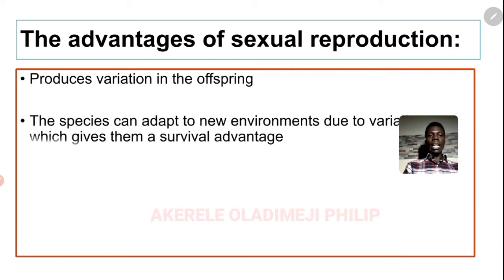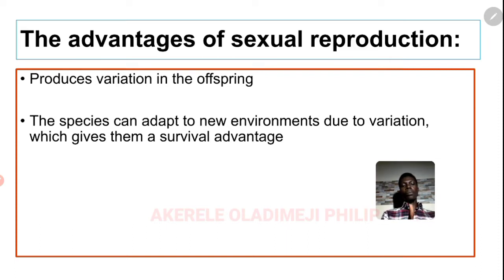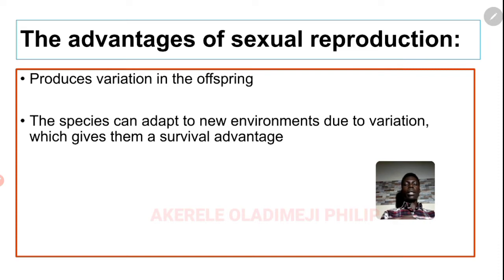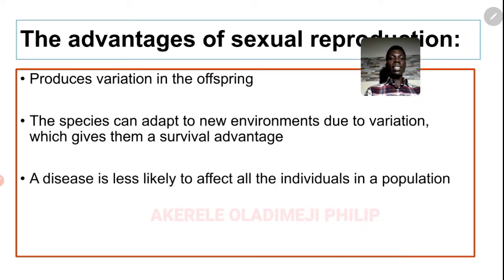Another advantage is that the species can adapt to new environments due to variation, which gives them extra advantage. Organisms produced by sexual reproduction are most times better than the preceding generation — because two parents came together to form the offspring, their strengths are combined in one organism. So organisms formed by sexual reproduction are meant to be better than their parents.